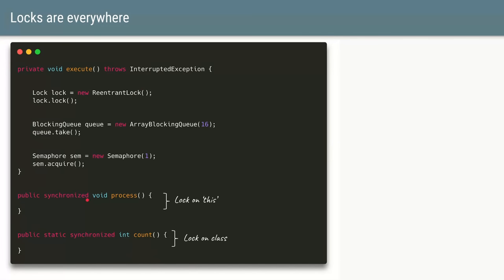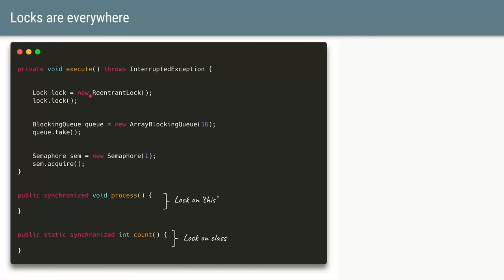We can use the synchronized keyword on a method — which acquires a lock on the object — or on a static method, which acquires a lock on the class itself. There are also ReentrantLock and ReadWriteLock. Additionally, concurrent utilities like BlockingQueue internally use locks — for example, the take() operation acquires a lock internally — and a Semaphore with one permit also implicitly acts as a lock. Our code is often littered with multiple types of locks.